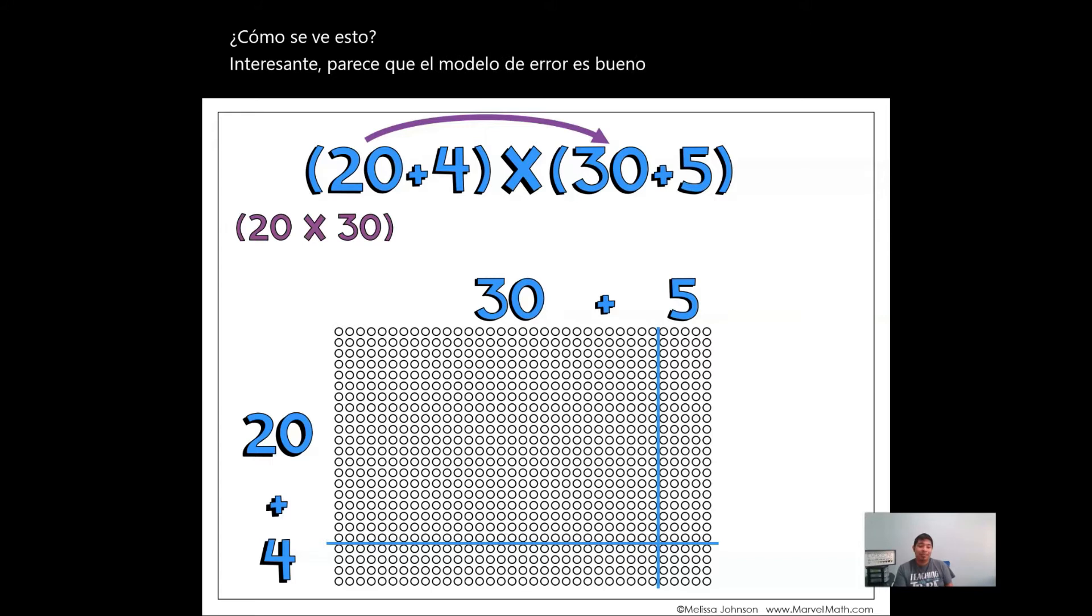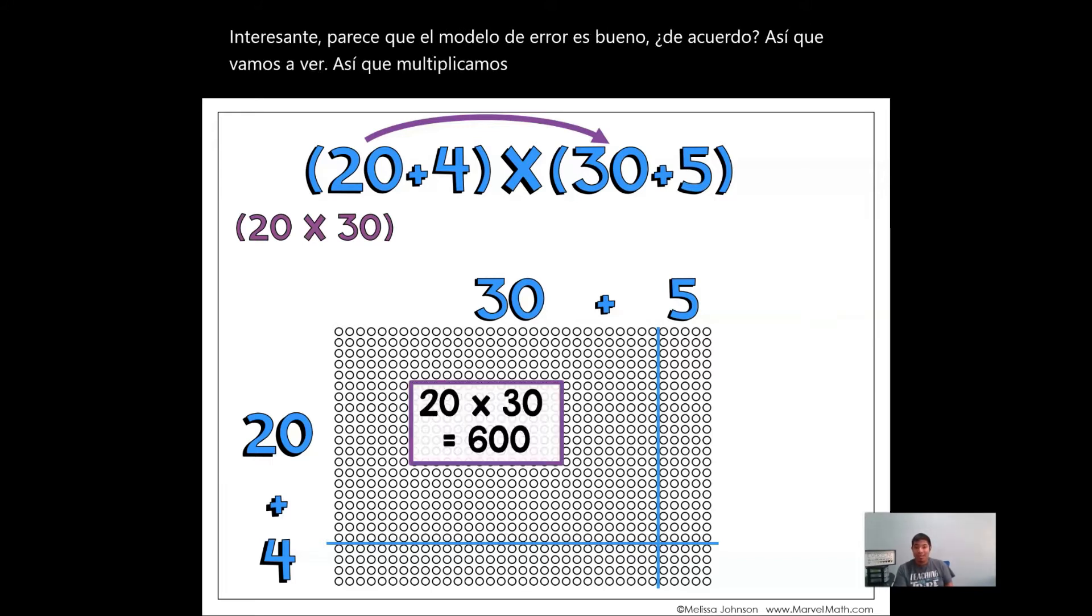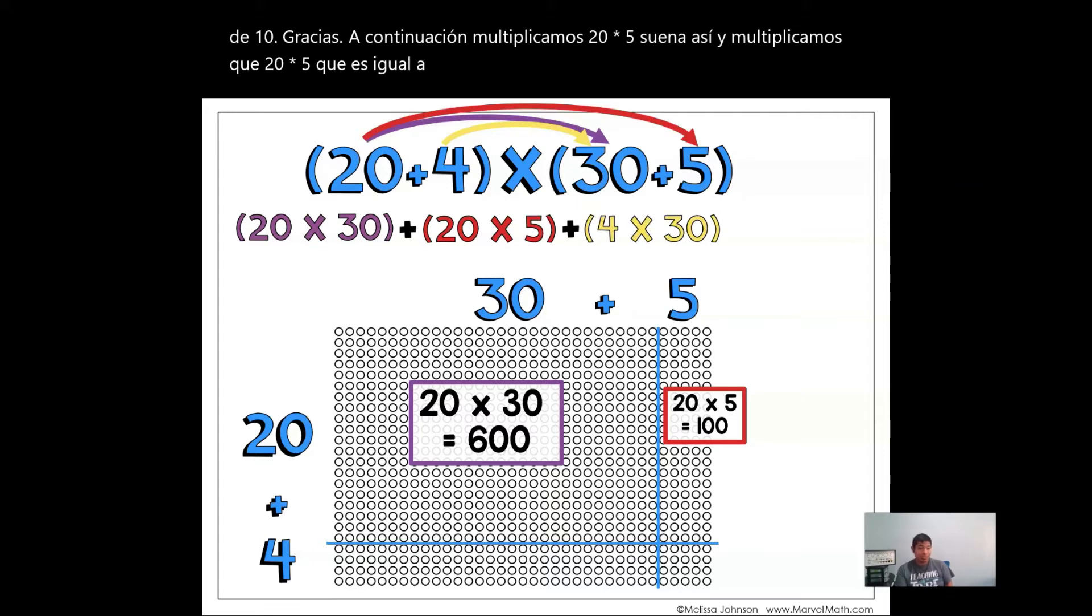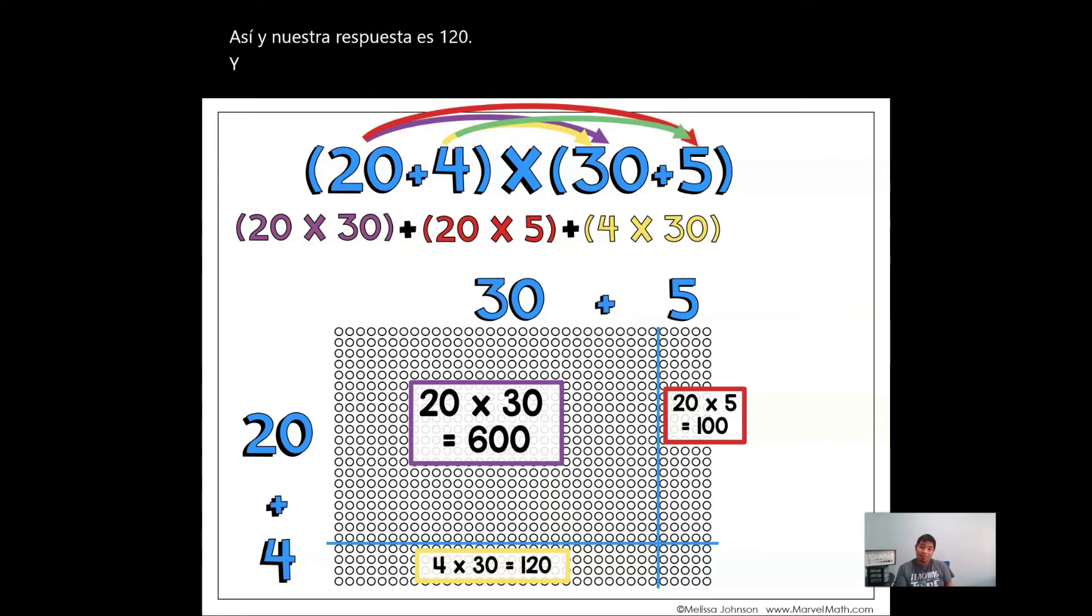So let's see. So we just multiply 20 times 30, just like that. And our answer is 600, power of 10. Next, we multiply 20 times 5, just like that. And we multiply that 20 times 5, which equals 100. Next, we multiply 4 times 30, just like that. And our answer is 120. And then we multiply 4 times 5, which equals 20.